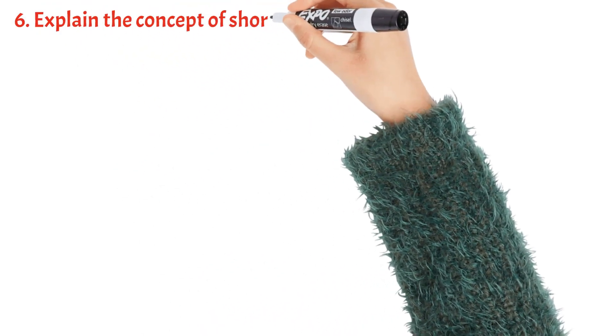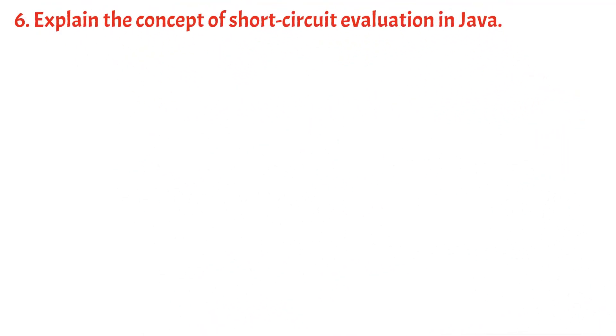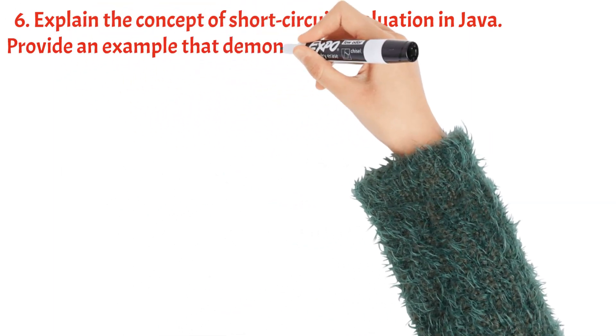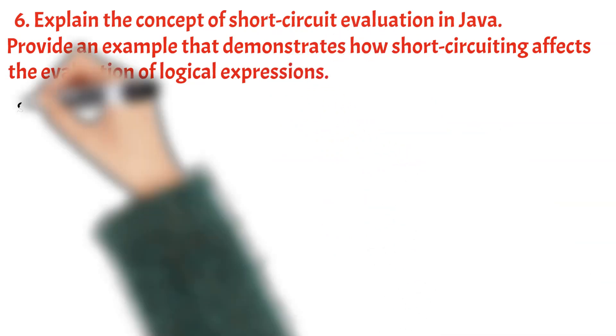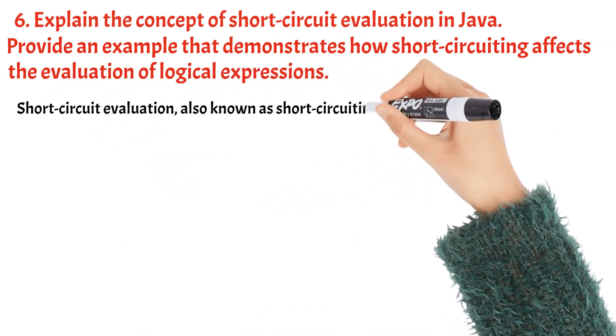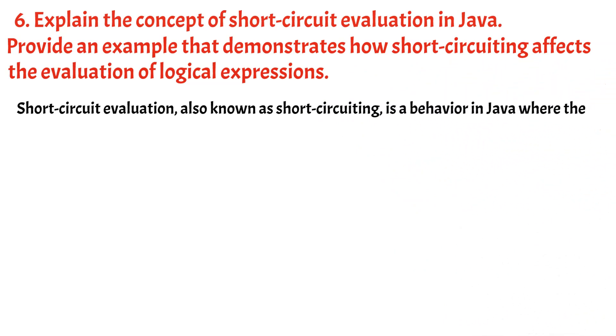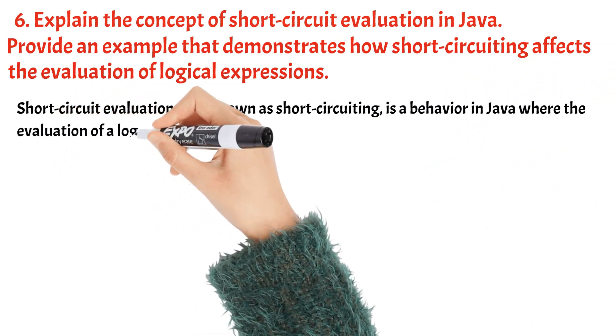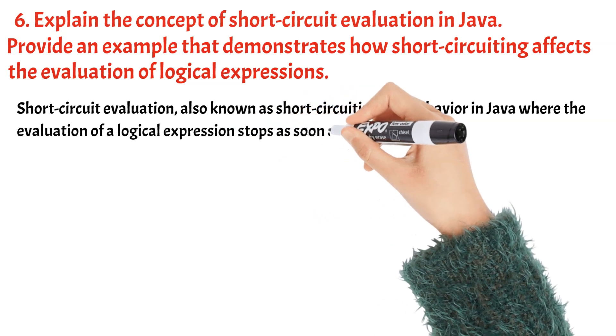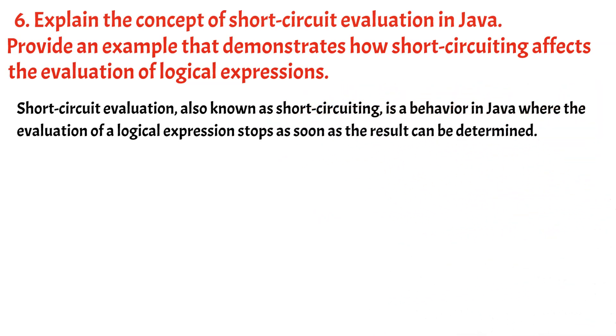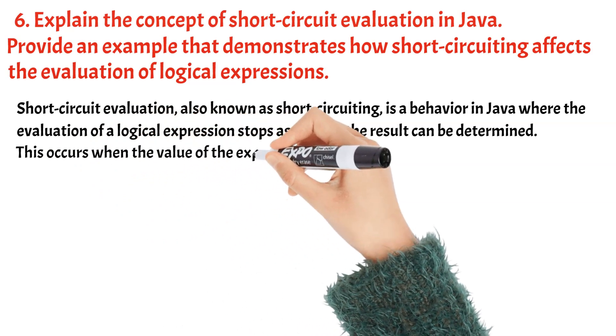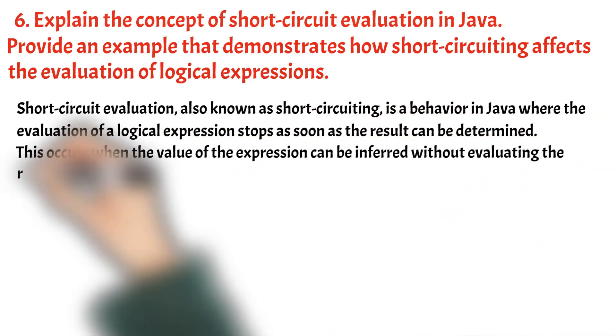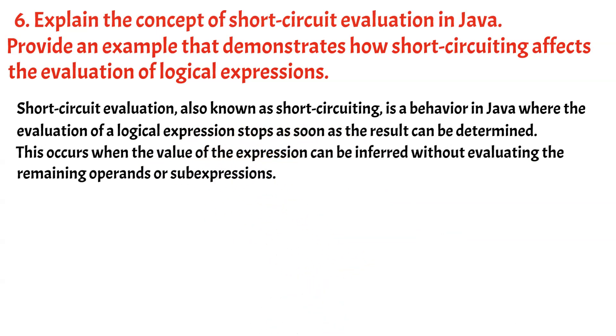Explain the concept of short-circuit evaluation in Java. Provide an example that demonstrates how short-circuiting affects the evaluation of logical expressions. Short-circuit evaluation, also known as short-circuiting, is a behavior in Java where the evaluation of a logical expression stops as soon as the result can be determined. This occurs when the value of the expression can be inferred without evaluating the remaining operands or sub-expressions.